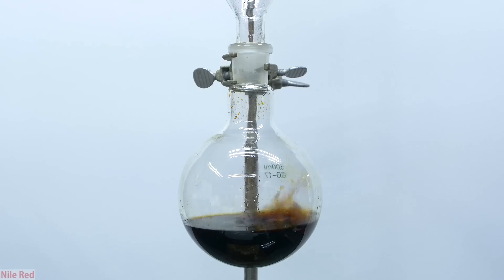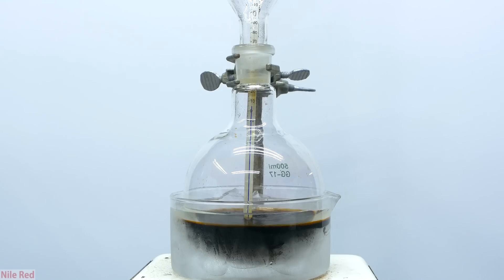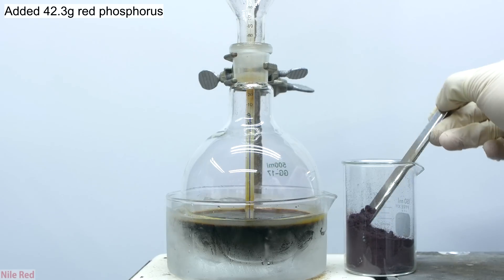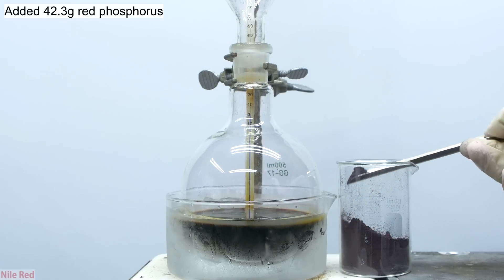The next thing that I do is drop in a stir bar and set up an ice bath. Once everything is stirring, I add in 42.3 grams of red phosphorus in small additions.